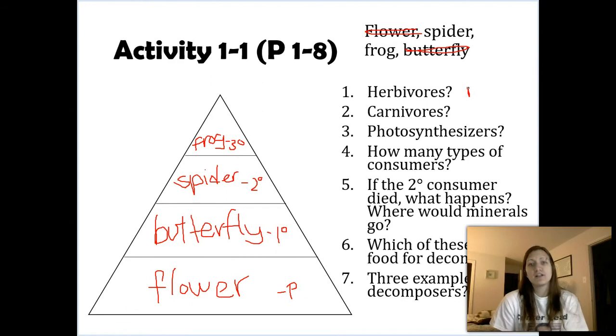How many carnivores do we have? Now do not mix up carnivores and consumers. Consumers are just something that eats something else. Carnivore specifically is eating other consumers, versus eating producers like herbivores. So in this case, we have two carnivores. We have spiders, who are eating butterflies. We also have frogs, frogs are eating spiders.